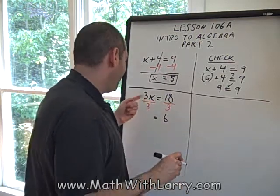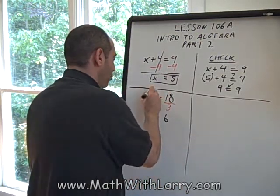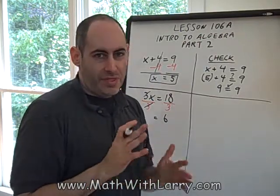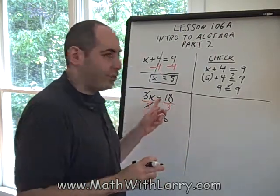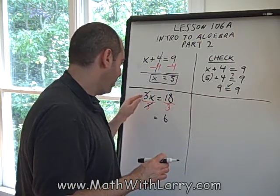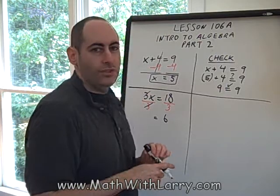Now on the left, what most students will do is they'll quickly cross out the 3 and the 3 and say they cancel. That is true, but it's very important to understand what's really happening here. We're dealing with 3 divided by 3. Now think about that for a minute. 3 divided by 3 is 1.